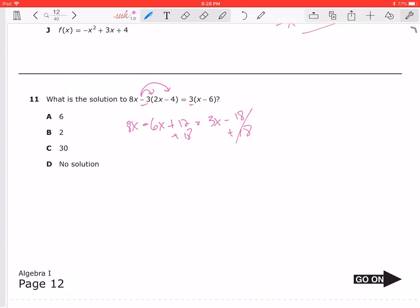So then I have 8 minus 6, 8 minus 6 will give us 2x. So 2x plus 8.